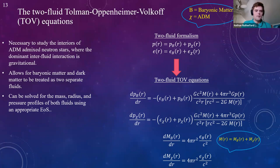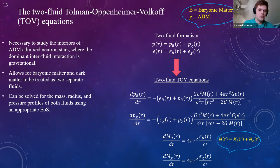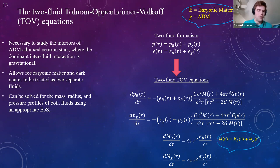The two-fluid formalism applies because the two fluids only interact gravitationally. They satisfy their own conservation of energy-momentum equations, allowing us to split the pressures and energy densities as two separate entities. Applying the TOV equations with this formalism yields the two-fluid TOV equations, where we can calculate the fluid pressures, mass, and radii of the baryonic parts separately, and also calculate the fluid pressure of ADM, its mass, and radii.